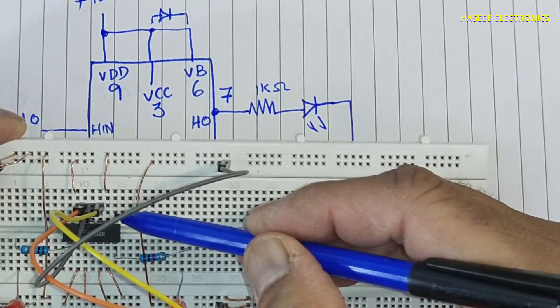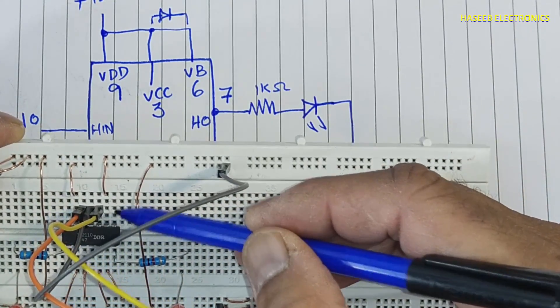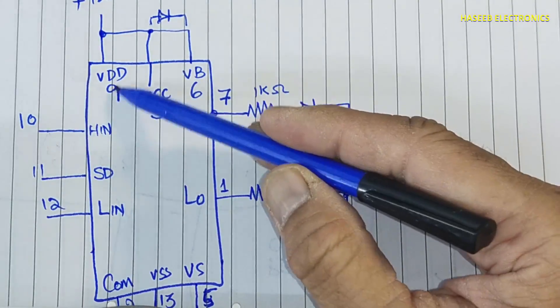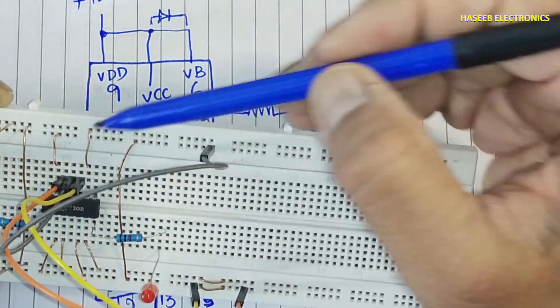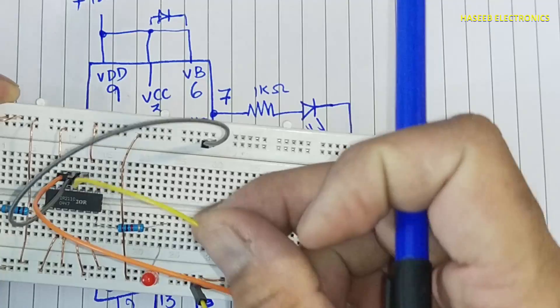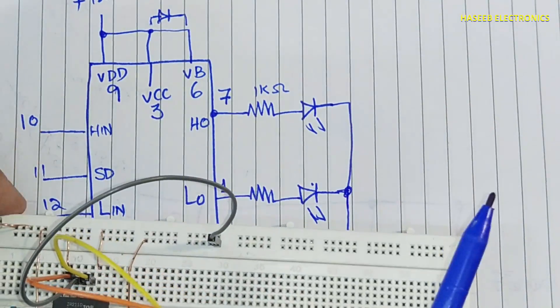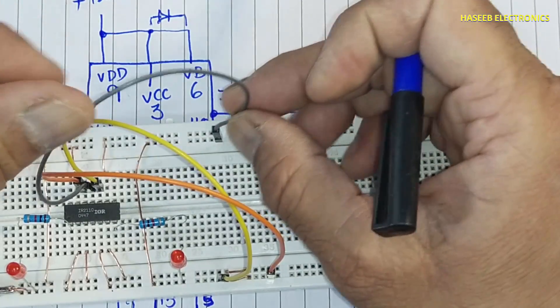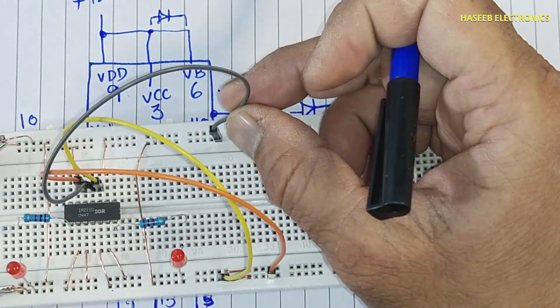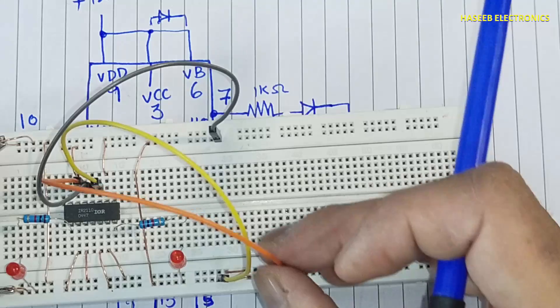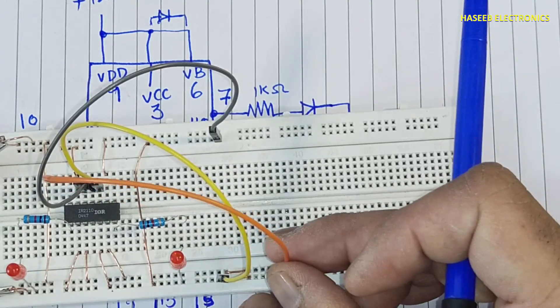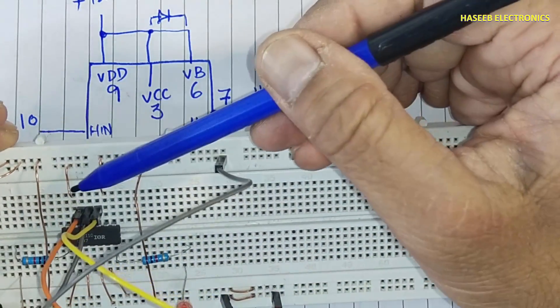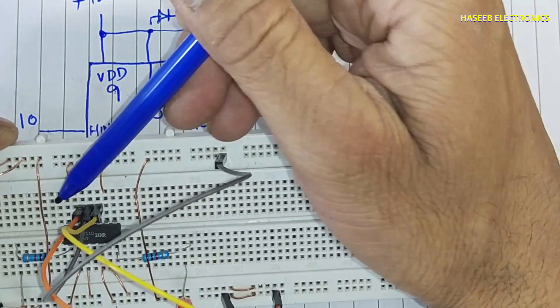Pin number 7, resistor is connected to anode of the LED, cathode is grounded. These two LEDs in the upside. Pin number 8 not connected, 9 positive. Pin number 10, that is signal input, high input signal. 11, this is shutdown pin, I will explain now practically. Pin number 12 low side input, pin number 13 connected to ground, 14 not connected.